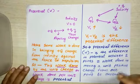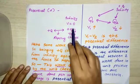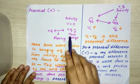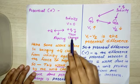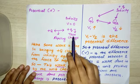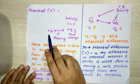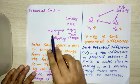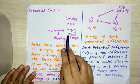At infinity the potential is 0 and at infinity there is a plus Q test charge. At some distance there is plus capital Q, and there is a force of repulsion between them.